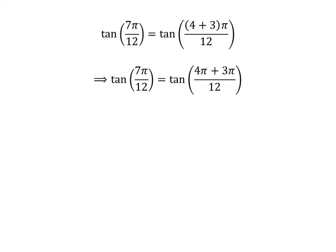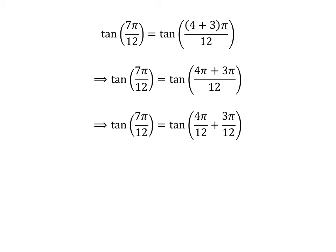Expanding the numerator, tangent of 7 times pi upon 12 is equal to tangent of 4 times pi plus 3 times pi upon 12. So the fraction 7 times pi upon 12 can be expressed as the sum of two fractions, 4 times pi upon 12 and 3 times pi upon 12. Cancelling out the common factor in the numerator and the denominator gives us tangent of 7 times pi upon 12 is equal to tangent of pi upon 3 plus pi upon 4.